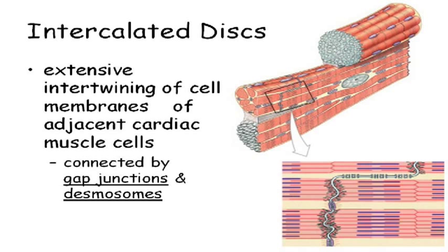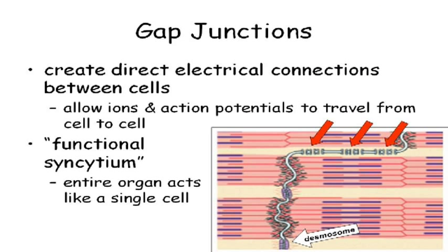What cardiac muscle cells do is pull on themselves so that they squeeze the chambers of the heart. Also present in these intercalated discs are what are called gap junctions. The desmosomes are the protein rivets that attach this cell to that cell, but you also have gap junctions here.